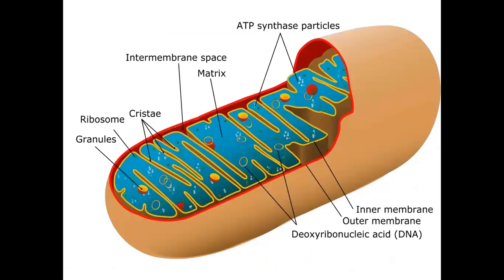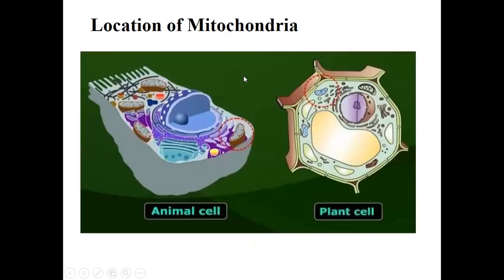Here is the basic figure of mitochondria. We have the outer membrane, then the inner membrane, the cristae of mitochondria, and then the matrix. The inner membrane space is present between the two membranes, and ribosomes are embedded or floating in the mitochondria. There are also granules and ATP synthesis particles that generate ATP — the energy compounds.